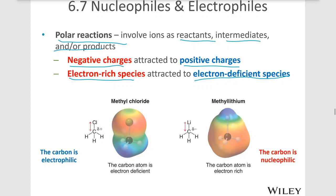This carbon is electrophilic because the carbon has a partial positive — chlorine is withdrawing electron density away from the carbon because chlorine is more electronegative than carbon, leaving a partial positive on the carbon and a partial negative on the chlorine. If we look at an electrostatic potential map of this molecule, we can see blue indicating a partial positive end of the molecule, kind of like a cold end, and red indicating a partial negative end, kind of a hot end of the molecule.